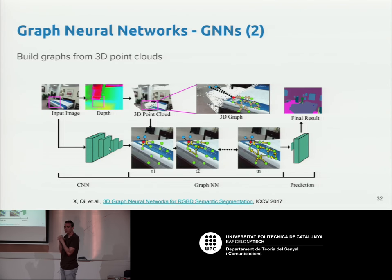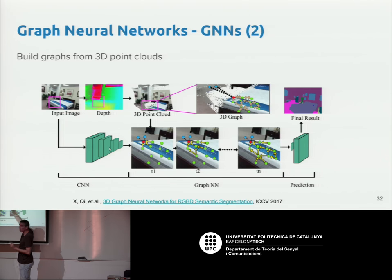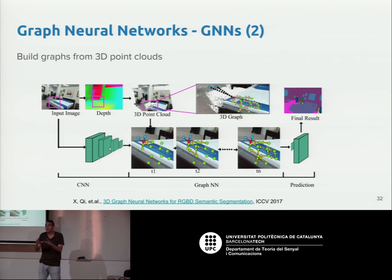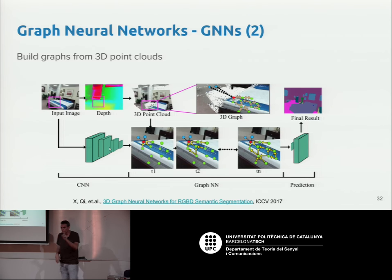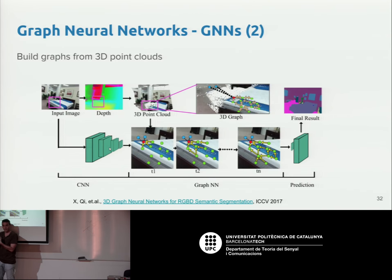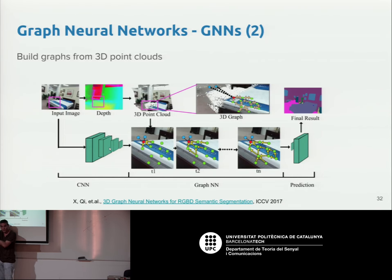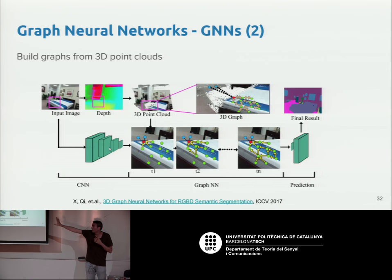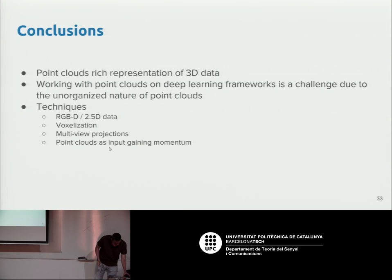In response to a question: the graph is built outside of the network — you have the 3D point cloud, build the graph, and then feed it to the network. In this particular example, because the point cloud was derived from an image, standard CNNs could be used to extract features. If the data comes directly from a 3D sensor without a corresponding image, you would only be able to use the graph structure without CNN-based feature extraction.